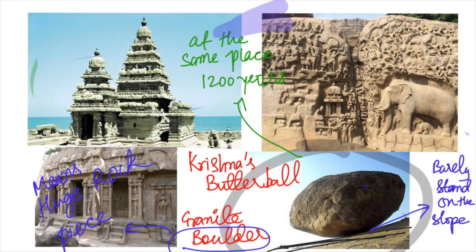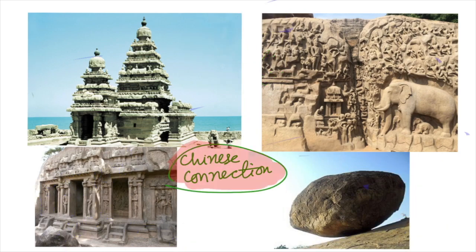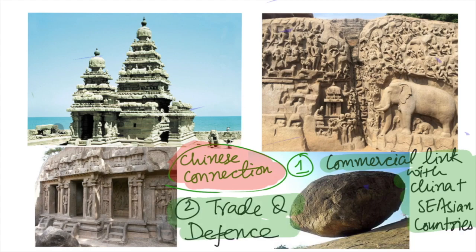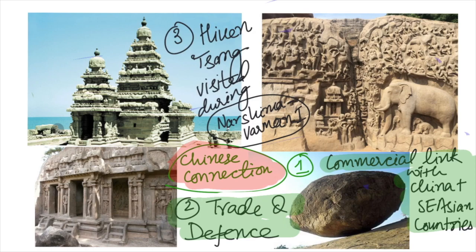Now we will see the Chinese connection. As per archaeological studies, Mahabalipuram had commercial links with China and other Southeast Asian countries. The Pallava kings established trade and diplomatic relationships with China. Also, the Chinese traveller Xuanzang visited the region during the rule of Pallava king Narasimha Varman I.